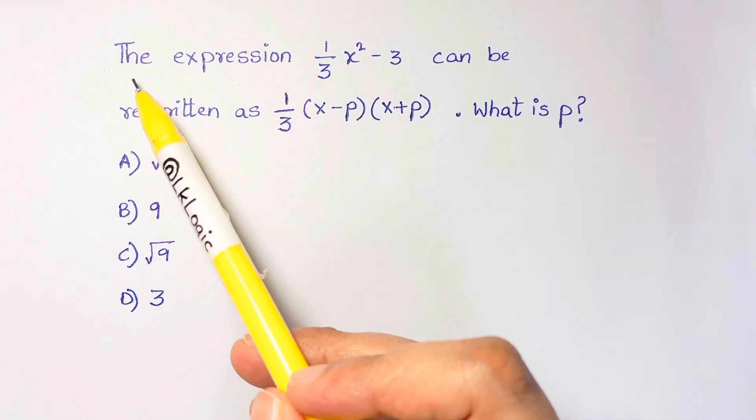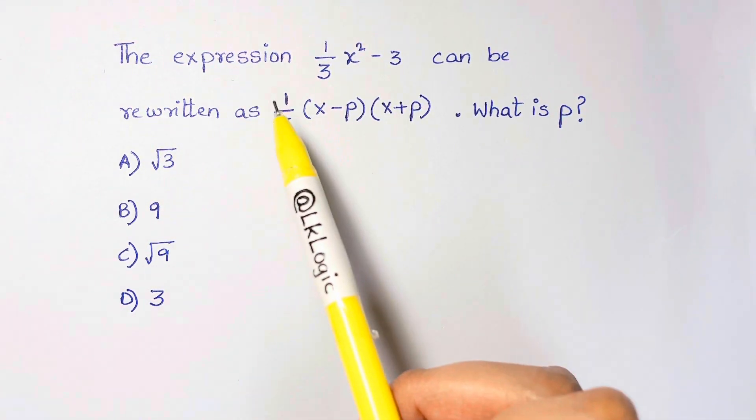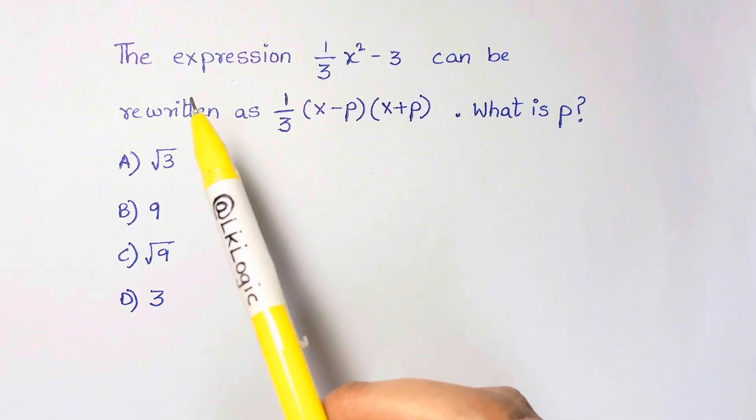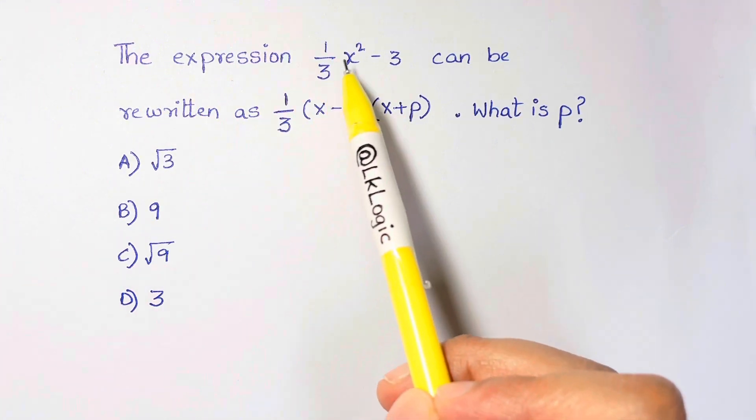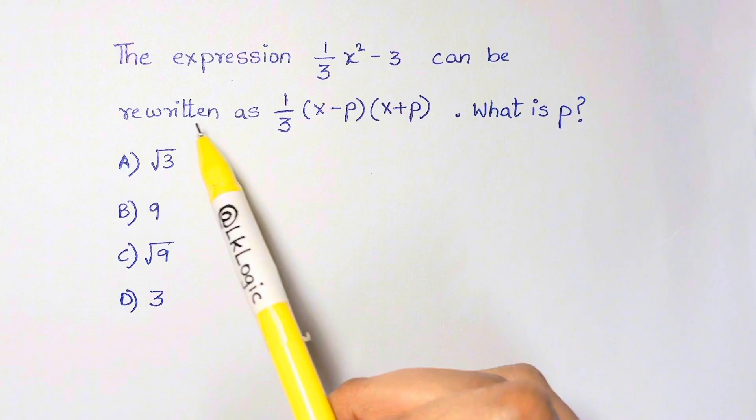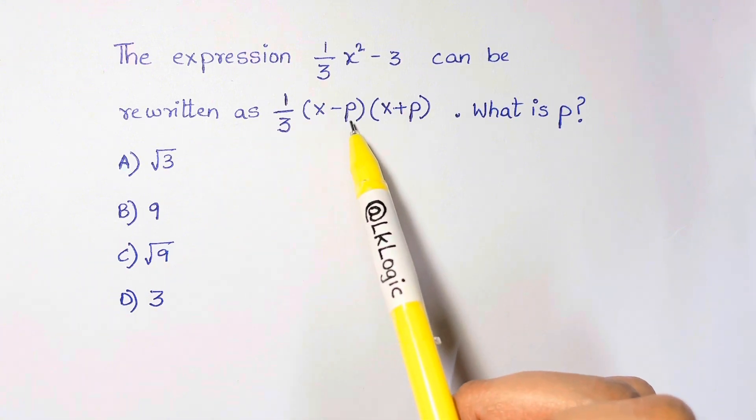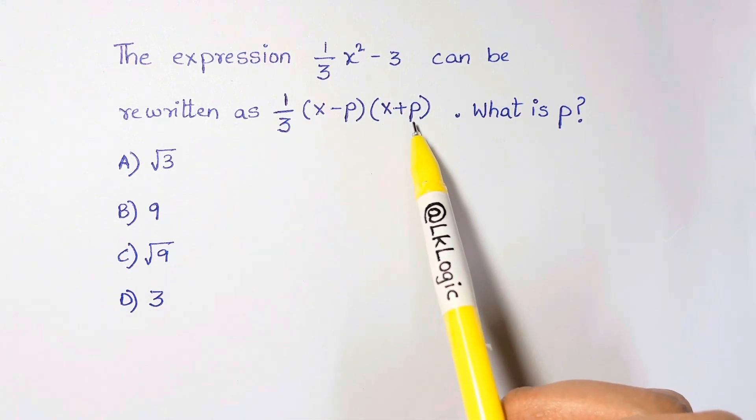Hi guys, many people make this mistake on the SAT's math section when factoring. The expression 1/3 x² - 3 can be written as 1/3(x - p)(x + p). What's p?